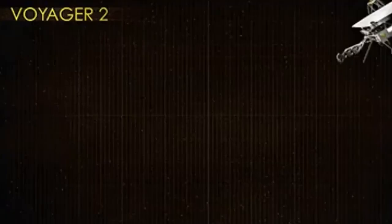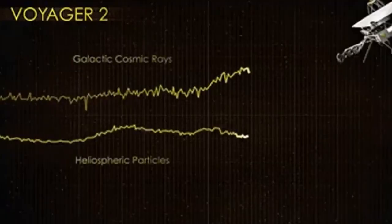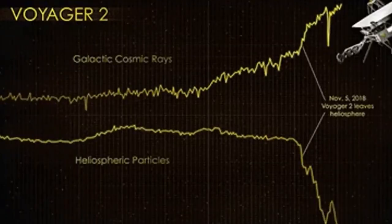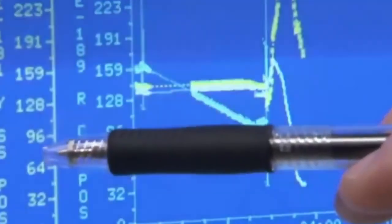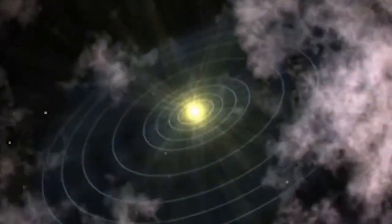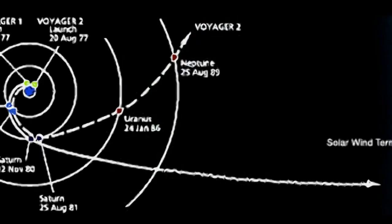Similarly, Voyager 2 followed in Voyager 1's footsteps and crossed into interstellar space in 2018. The data from Voyager 2 provides a complementary perspective on the boundary conditions between our solar system and interstellar space. By comparing observations from both spacecraft,